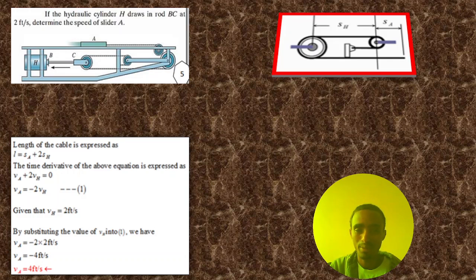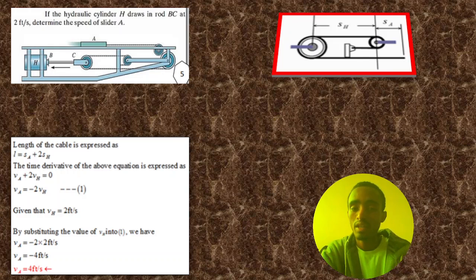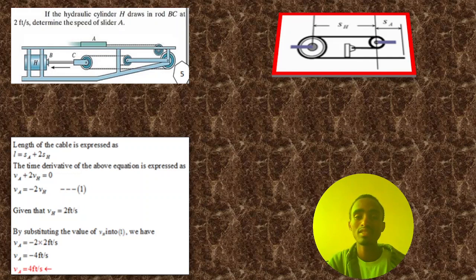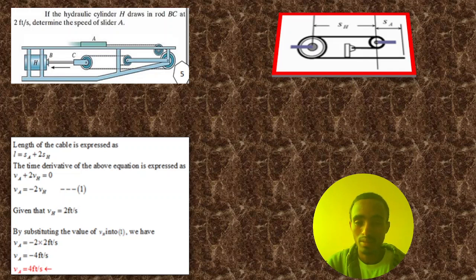It is a very simple problem. First we draw the free-body diagram, then we draw the equation of length by using the procedure. Finally, you can substitute the given value of two feet per second into the equation you found, and after that solve for the subject and get your final answer.